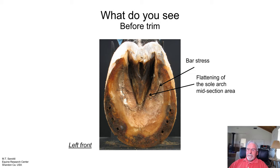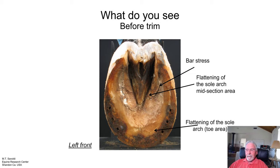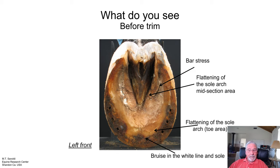The next thing we see is flattening through the midsection here — flattening of the sole. Why is this flattening? We'll answer that in a few minutes. Flattening of the sole arch in the toe area is just getting flatter. Here we see bruising in the toe area — that's not a good sign.